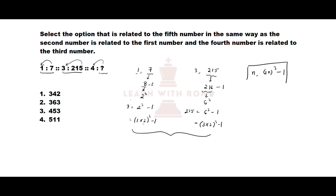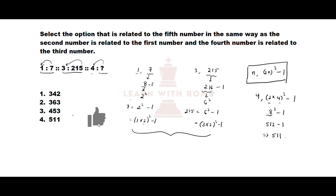Now let's find the value related to 4. With n = 4: (2 × 4)³ - 1 = 8³ - 1 = 512 - 1 = 511. So our answer is 511, which is option number 4.